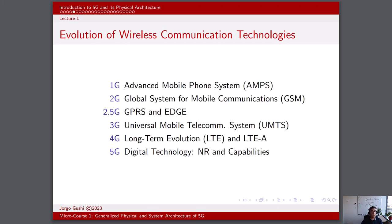In this slide, I am covering some common terminologies used for each of the wireless communication technologies used throughout the years. For 1G, we use the Advanced Mobile Phone System, or AMPS. For 2G, we use Global System for Mobile Communications, or GSM. 2.5G, which was the generation in between 2G and 3G, was GPRS and Edge. Then we move into 3G with the Universal Mobile Telecommunication System, or UMTS.